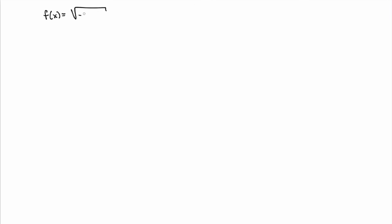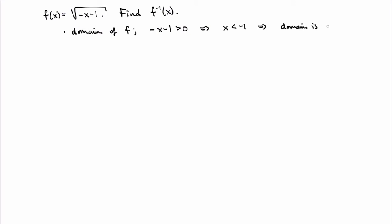Let me now work through an example. Suppose I'm given the function f(x) = √(−x − 1) and I want to find the inverse function f⁻¹(x). The first thing to do is calculate the domain and range of f, since these will become the range and domain of the inverse. The domain requires −x − 1 ≥ 0, so x ≤ −1. The range of f is all non-negative numbers, since a square root always gives a non-negative value.